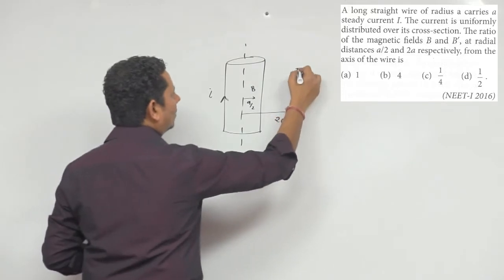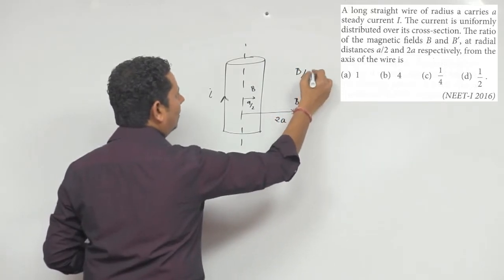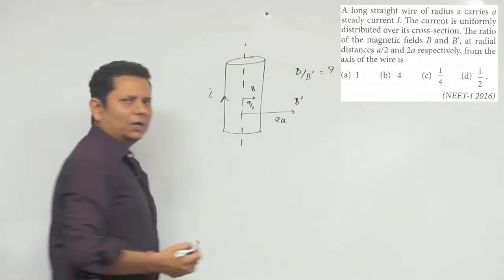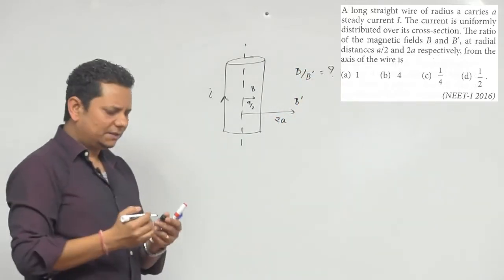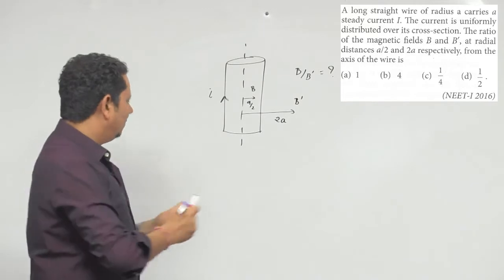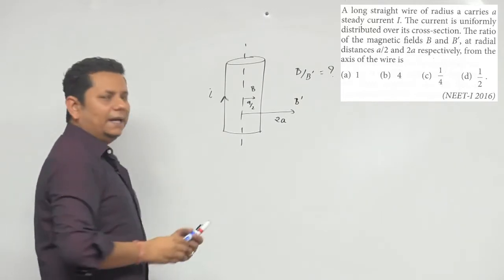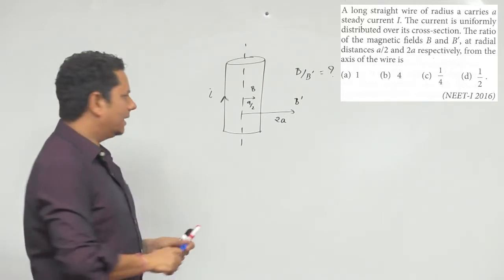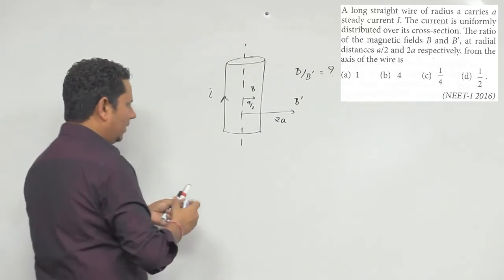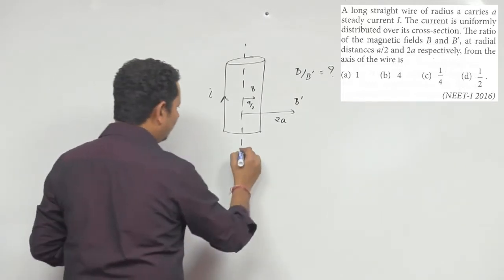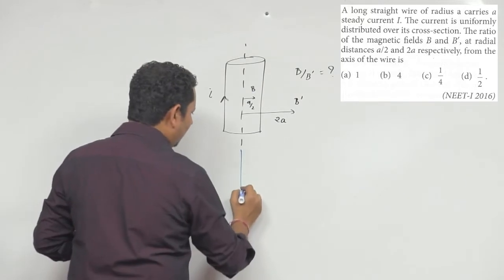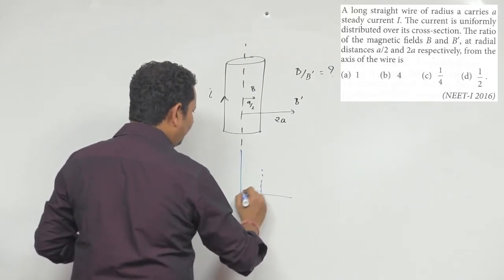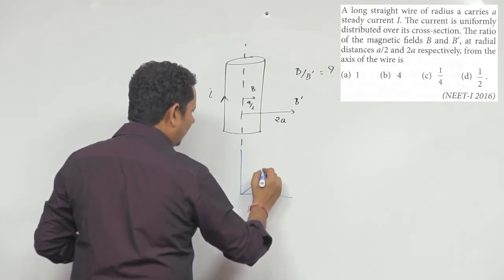तो हमें बताना है इन दोनों का ratio क्या होगा — B divided by B dash। यह simple सवाल है। इसका graph हमने कई बार class में derive किया हुआ है — graph एक बार फिर बताता हूं और formula पर भी बात करेंगे।